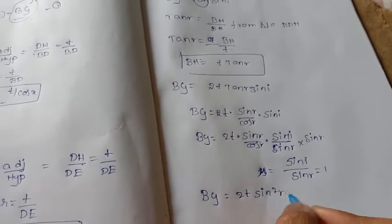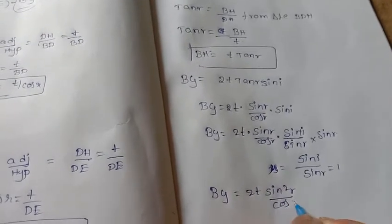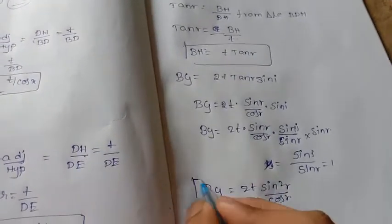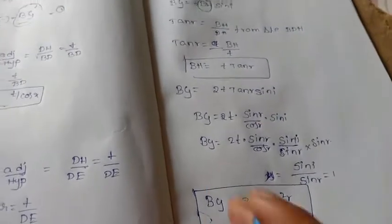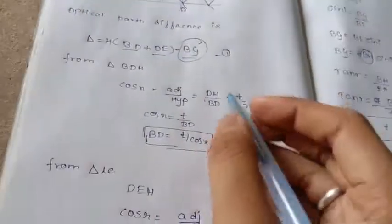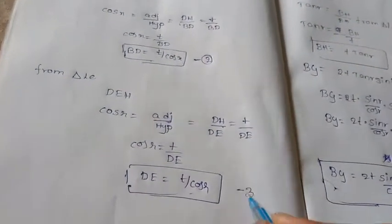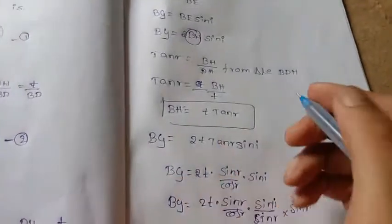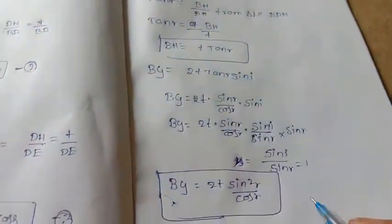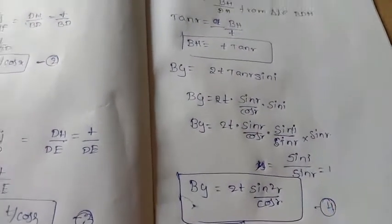I already got the BD value as the second equation, and DE value as the third equation, and these as the fourth equation.